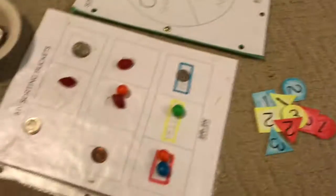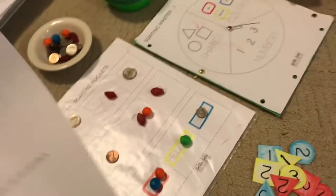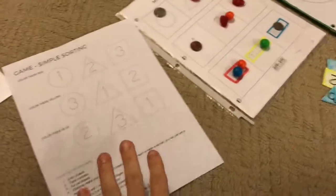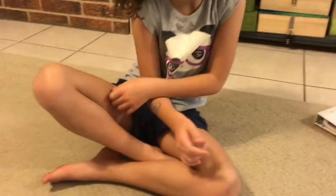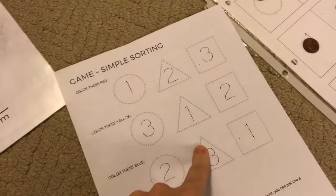So the first thing you're going to do is you're going to print out all the pages. One of the first pages is the game pieces.